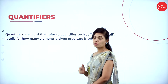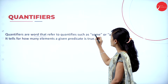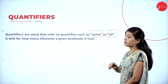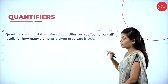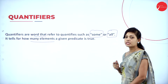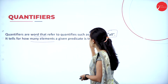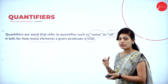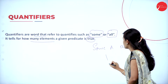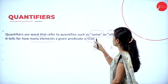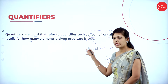The next part is quantifiers. What is the meaning of quantifiers? Quantifiers are words that refer to quantities such as 'some' or 'all'. It tells for how many elements a given predicate is true. So some or all statements indicate how many predicates are true. This is the definition of quantifiers.